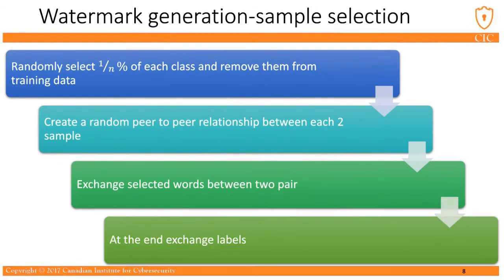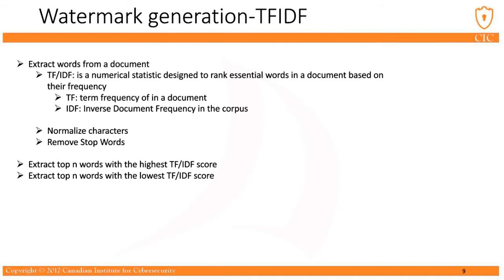For watermark generation, we need to select some samples. We randomly select 1/n percent of each class and remove them from the training data. Then we create a random peer-to-peer relationship between two samples. After that, we extract k words from each document and exchange them. Finally, we replace their labels too. The main issue in this algorithm is how to extract words from a document. We use TF-IDF score to extract words. TF-IDF is a numerical statistic designed to rank important words in a document based on their frequency. For calculating TF-IDF, first we normalize characters of the dataset.